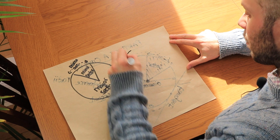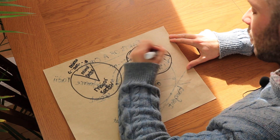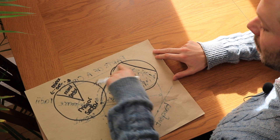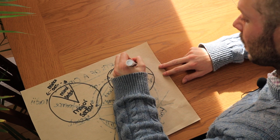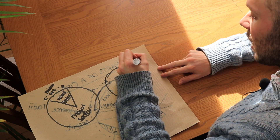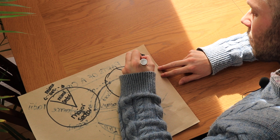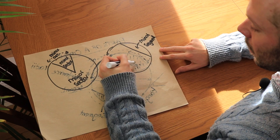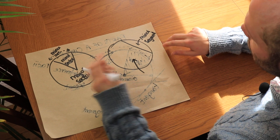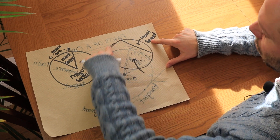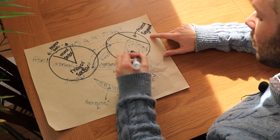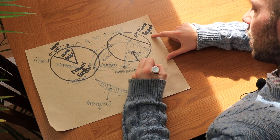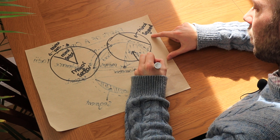The same applies to segments. A minor segment is the region between a chord and the shorter arc of the circumference. The larger region between the same chord and the circumference is called a major segment, because it's more than half of the circle.